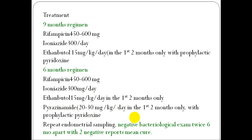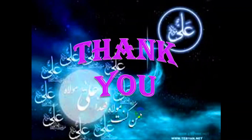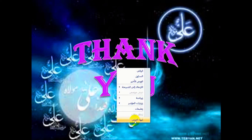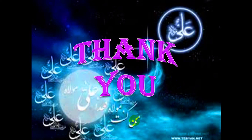Treatment is medical: a nine-month regime includes ethambutol and pyrazinamide. A six-month regime includes ethambutol and other agents. In our country, TB is now very uncommon because of improved conditions.